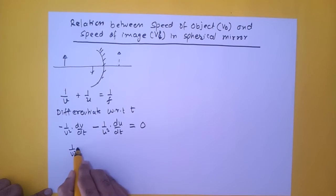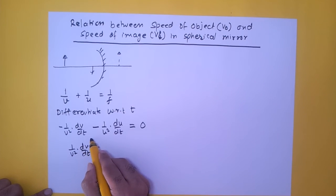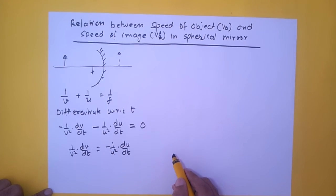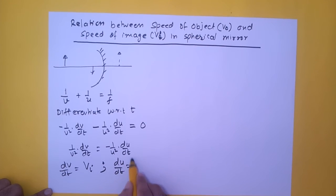1 upon v square dv by dt is equal to minus 1 upon u square du by dt. Now dv by dt is speed of the image V_I and du by dt is speed of the object.